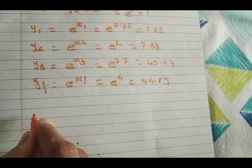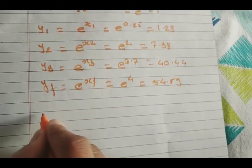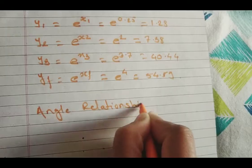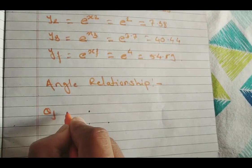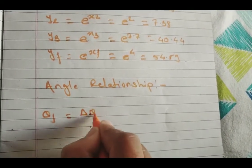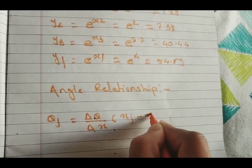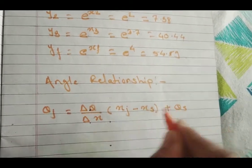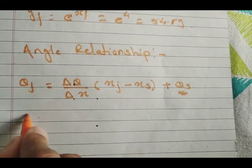Now calculation of theta_j and phi_j. We need to use the angle relationship. Theta_j = (delta_theta / delta_x)(xj - xs) + theta_s. Here we are going to consider theta_s = 0, so the formula becomes theta_j = (delta_theta / delta_x)(xj - xs).